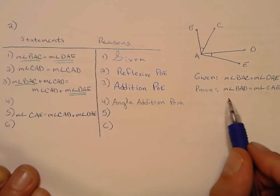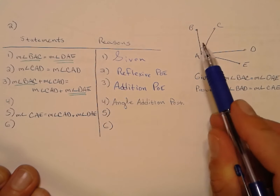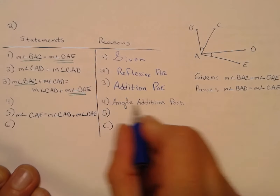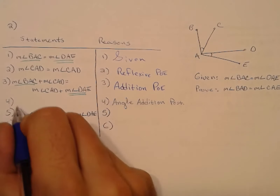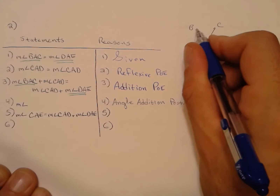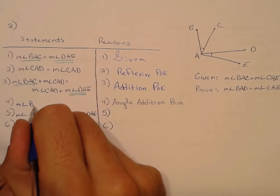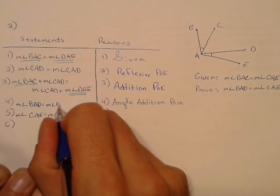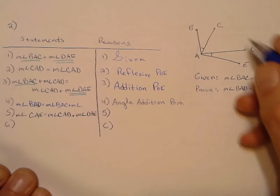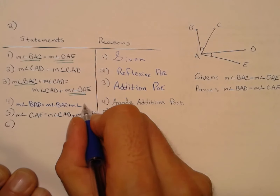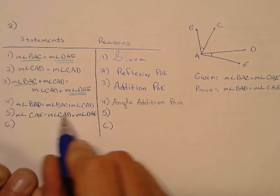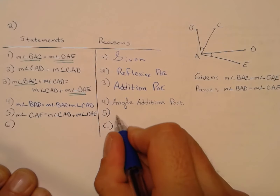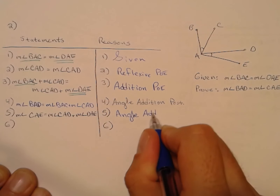I'm trying to prove something about the measure of angle BAD. Looking at the picture, angle BAD is made up of two little angles added together — so the Angle Addition Postulate says the big angle equals the two little ones: measure of angle BAD equals measure of angle BAC plus measure of angle CAD. Similarly, angle CAE is made up of its two little parts, also by the Angle Addition Postulate.